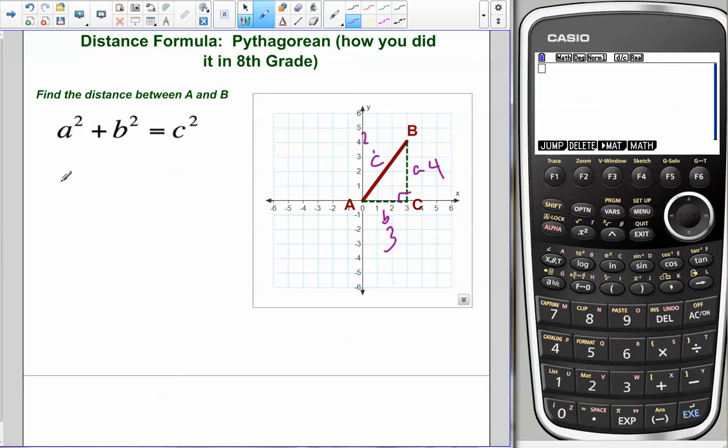So we got 4 squared plus 3 squared equals C squared. I'm going to do this by hand, that's 16 plus 9 equals C squared. And of course we got C squared equals 25.